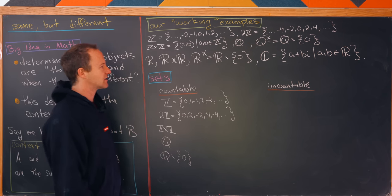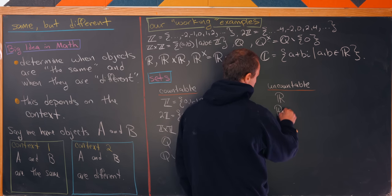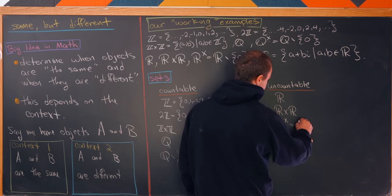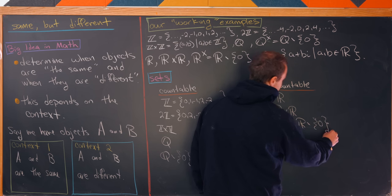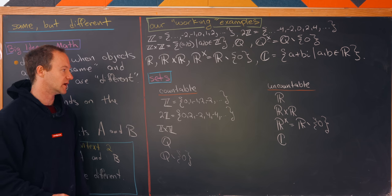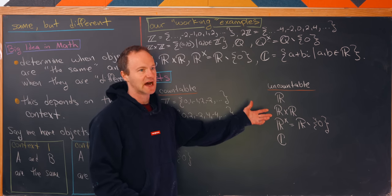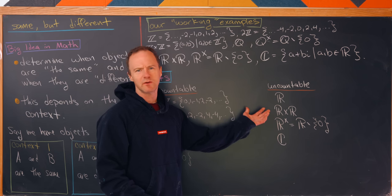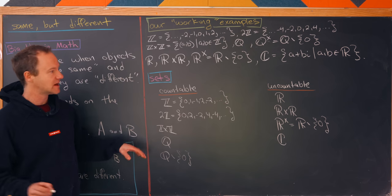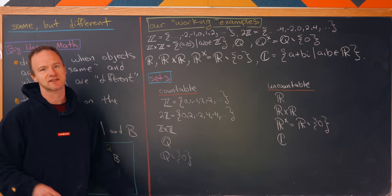The uncountable sets are everything else: R, R×R (also uncountable), R* (all non-zero real numbers, also uncountable), and finally the complex numbers C, also uncountable. As I said, these are all the same size — equal cardinality — though we won't argue that here.